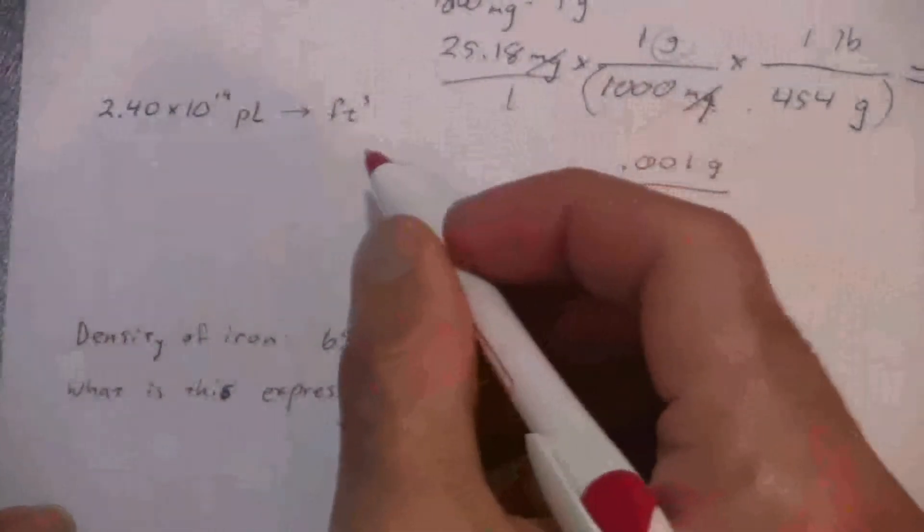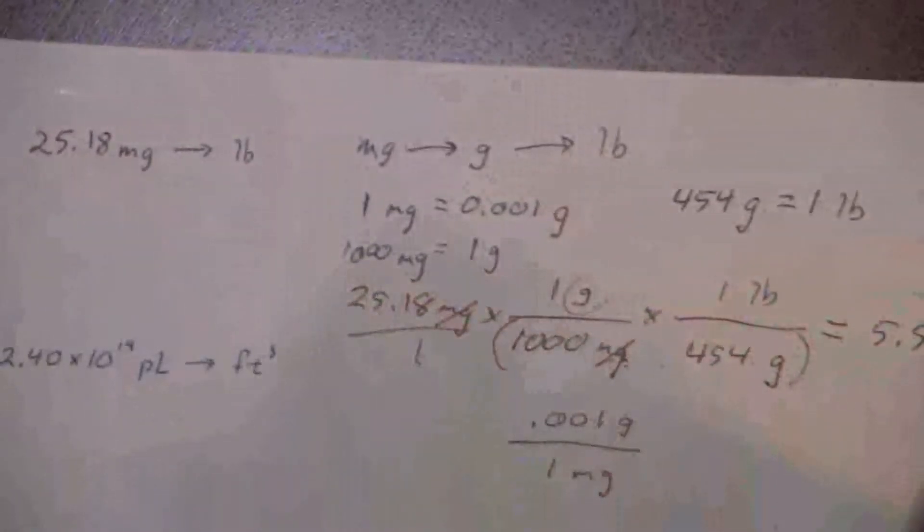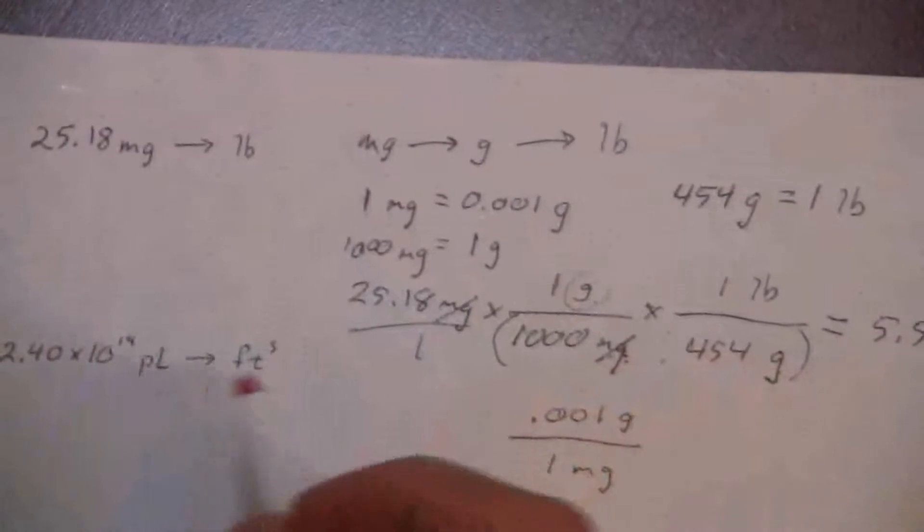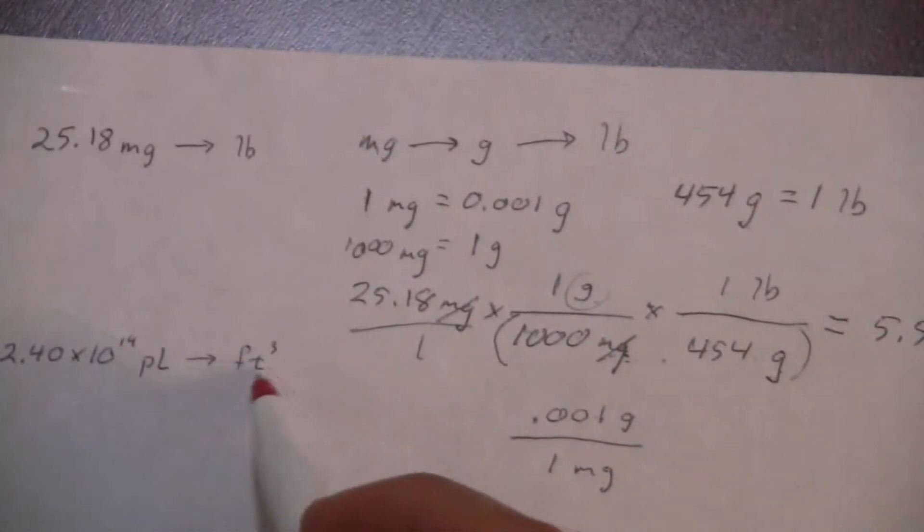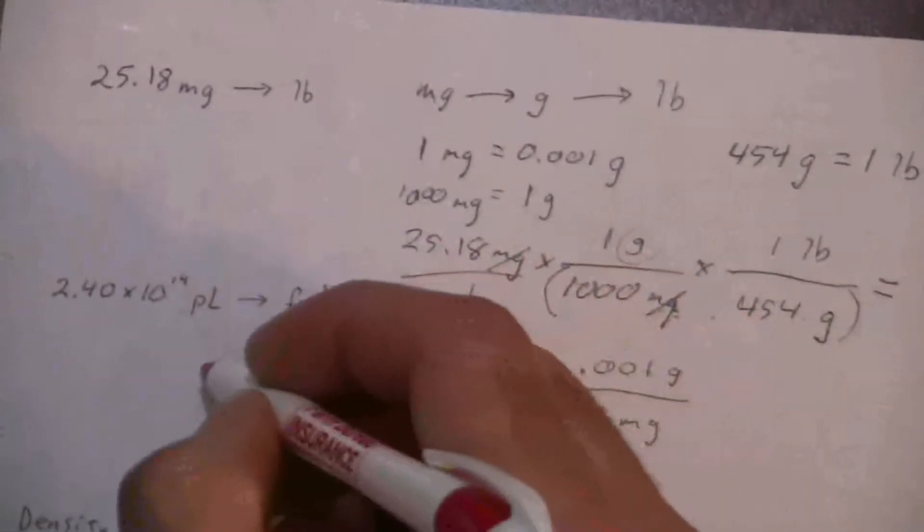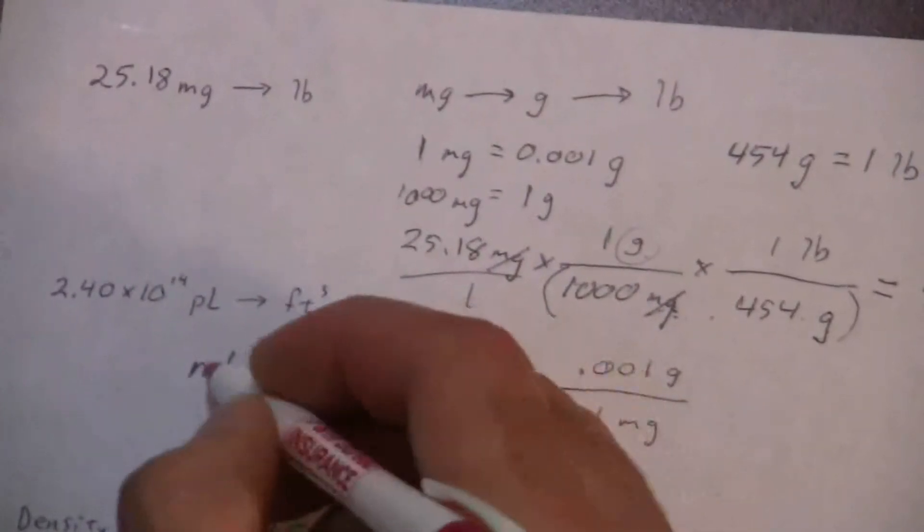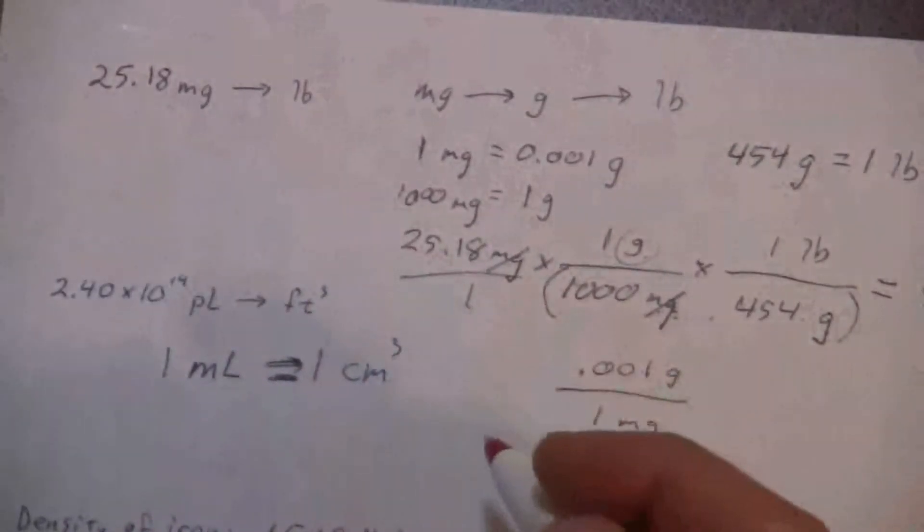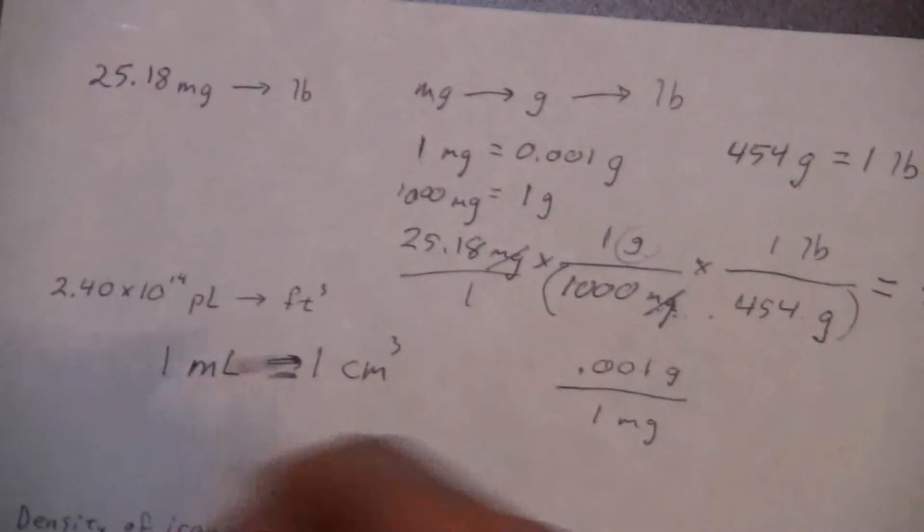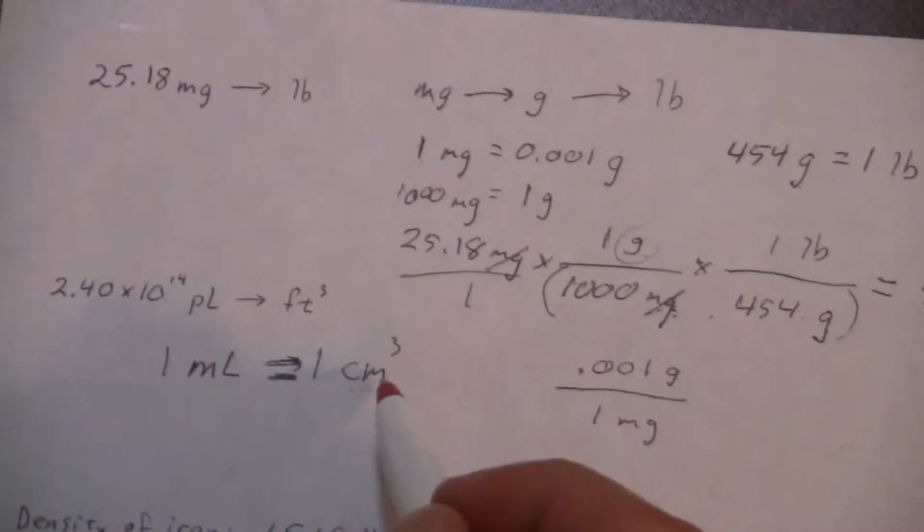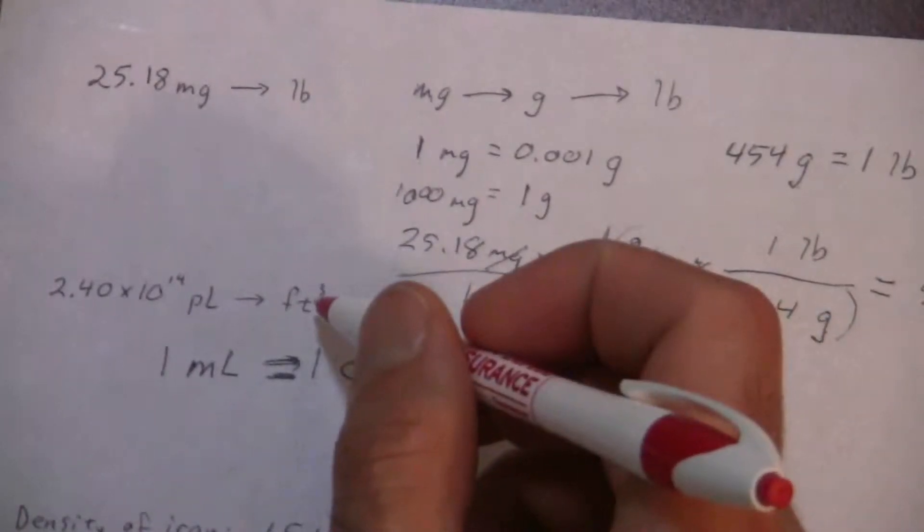So let's do just like we did in the first one. Let's map out some way that we can get from picoliters to cubic feet. Now what you generally want to have in mind if you're going from volume units to cubic length units, you're thinking milliliters, which are the same. I'll put an equal sign here. One milliliter is equal to one cubic centimeter. So at some point we're going to need this relationship because that's going to go from our liter volume units to our cubic length units, centimeters. And then from centimeters, I can go to inches and then to feet.